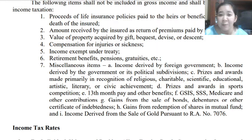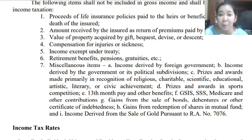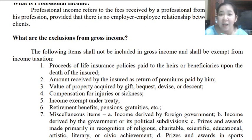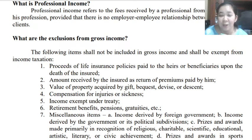Letter H: gains from redemption of shares in a mutual fund — this is like an investment and is non-taxable. Letter I: income derived from the sale of gold. Those are the items of income which are non-taxable or exempted from income tax. If an individual earns or gains any of these items, they may not include them in the gross income subject to tax because they are exempted.